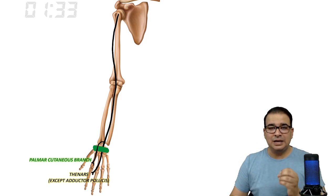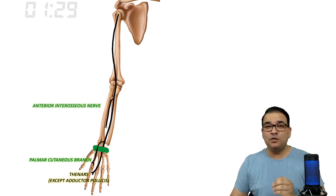In the forearm, the median nerve gives off a branch called the anterior interosseous nerve, which supplies the deeper muscles of the anterior compartment of the forearm.